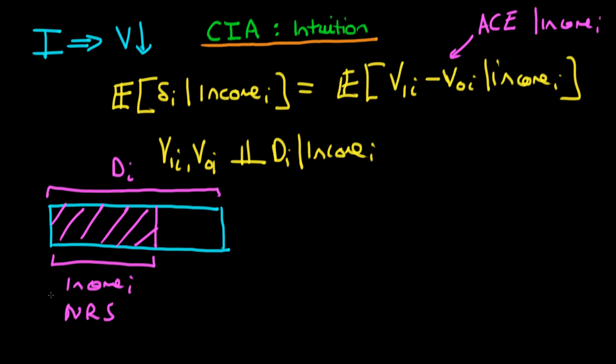And so this whole part here is a part which is associated with selection bars, because we know that states which are possibly poorer might be those states which are more likely to receive infrastructure spending.